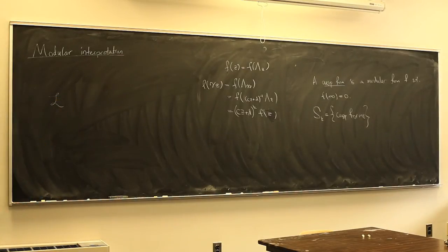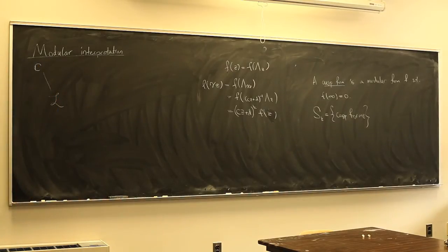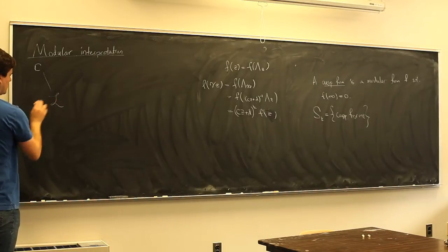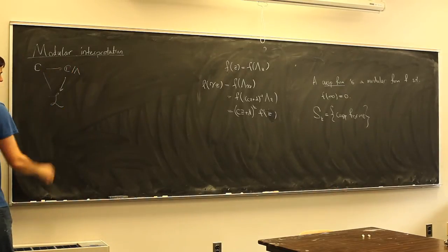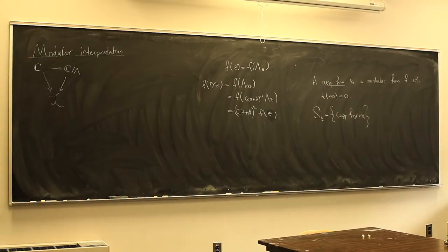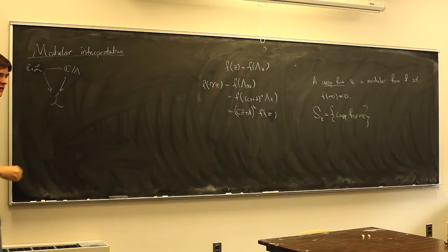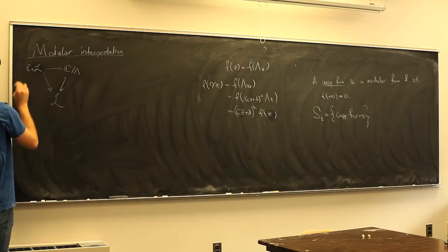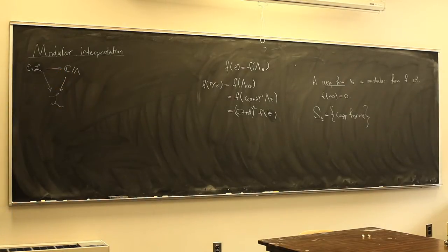We have the space of lattices ℒ, and over this we can think of the trivial vector bundle ℂ — that's just ℂ × ℒ. For each point, which by definition is a lattice in ℂ, you can form the quotient, getting a family of elliptic curves where the fiber over Λ is ℂ/Λ. I'm going to let w be a parameter on this ℂ — the identity map from ℂ to ℂ — giving a differential dw. It descends to the quotient, giving a global holomorphic one-form on the quotient.